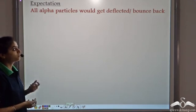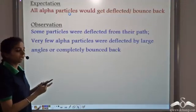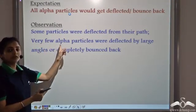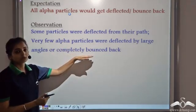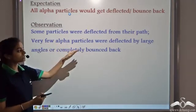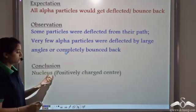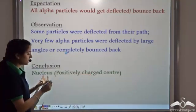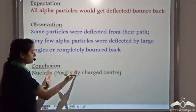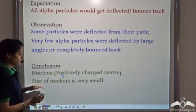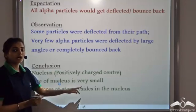He was expecting the particles to be deflected or bounce back, but he observed that some particles were deflected from their path and very few alpha particles were deflected by very large angles or completely bounced back. So he was able to conclude that there is a positively charged centre, which he called the nucleus, where all the protons are concentrated. The size of the nucleus is very small, and it is in the nucleus that all the mass of the atom resides.